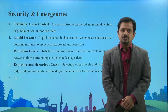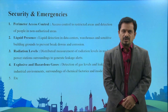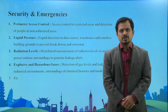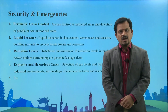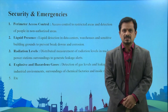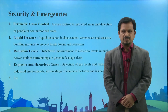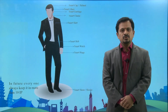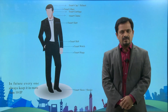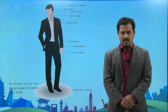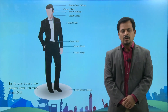Security and emergencies: perimeter access control which is directly related to geographical boundary limits, liquid presence detection, radiation levels, and explosive and hazardous gas identifications. Every person tries to use smart devices in their day-to-day life.